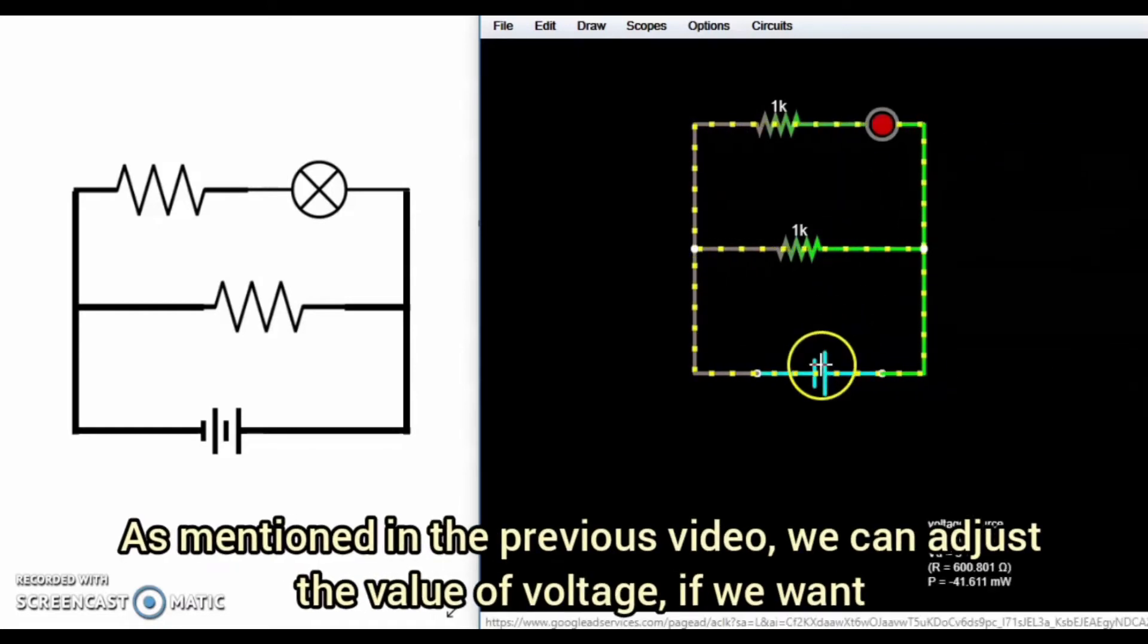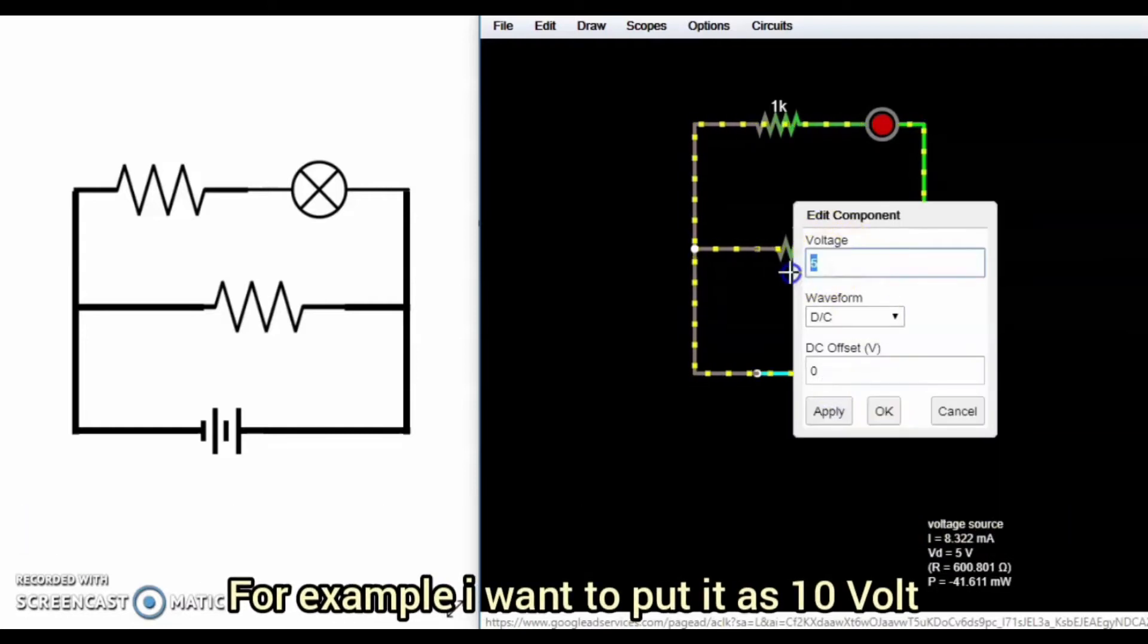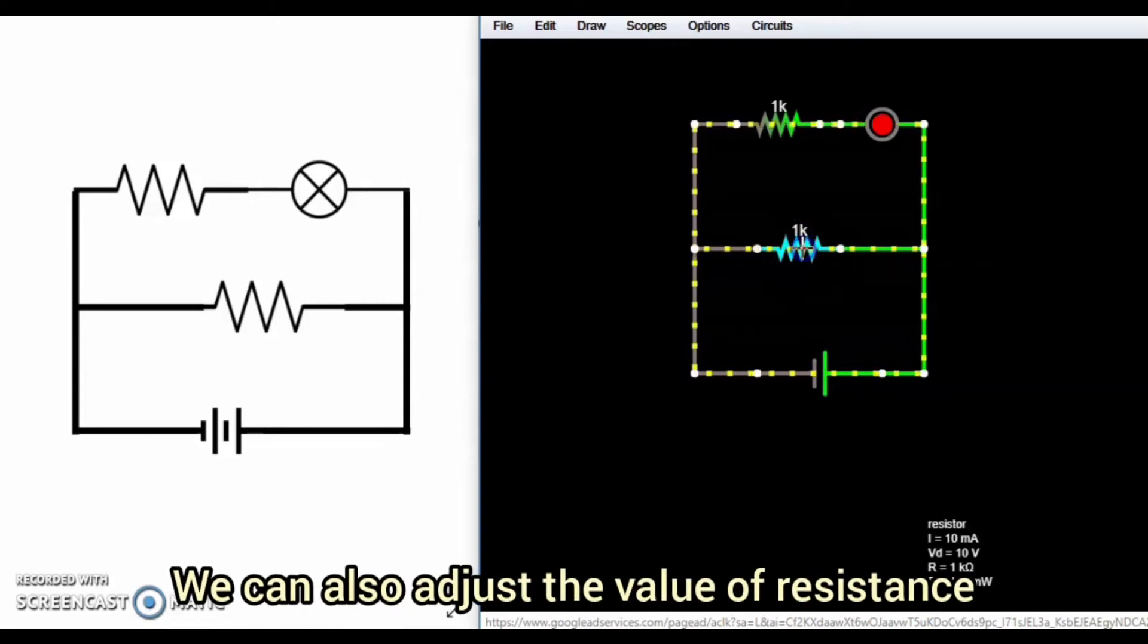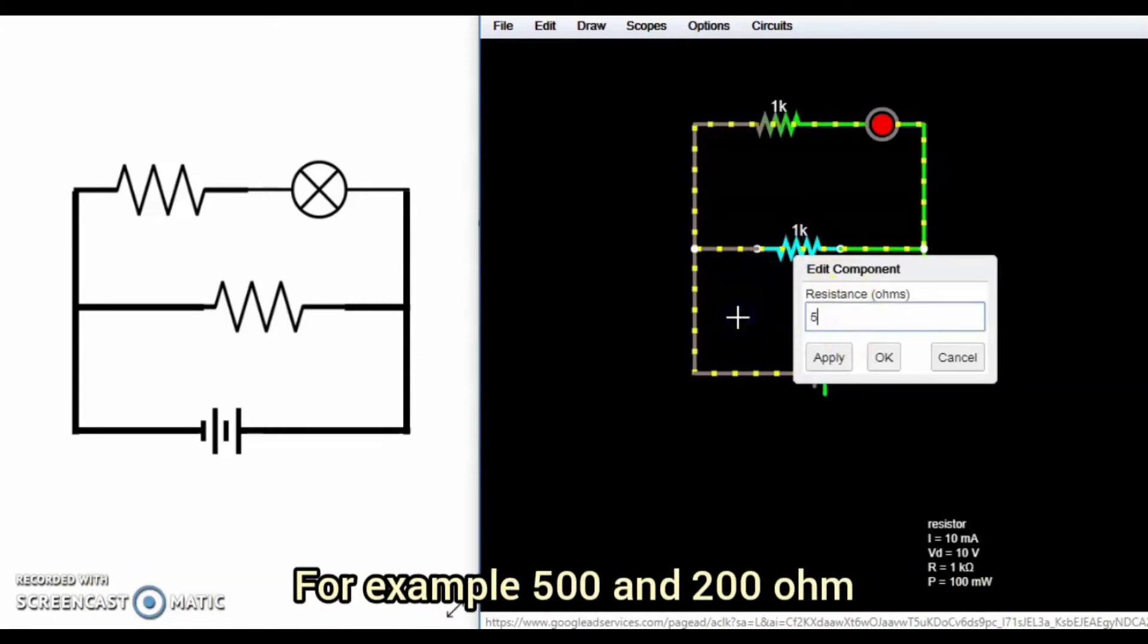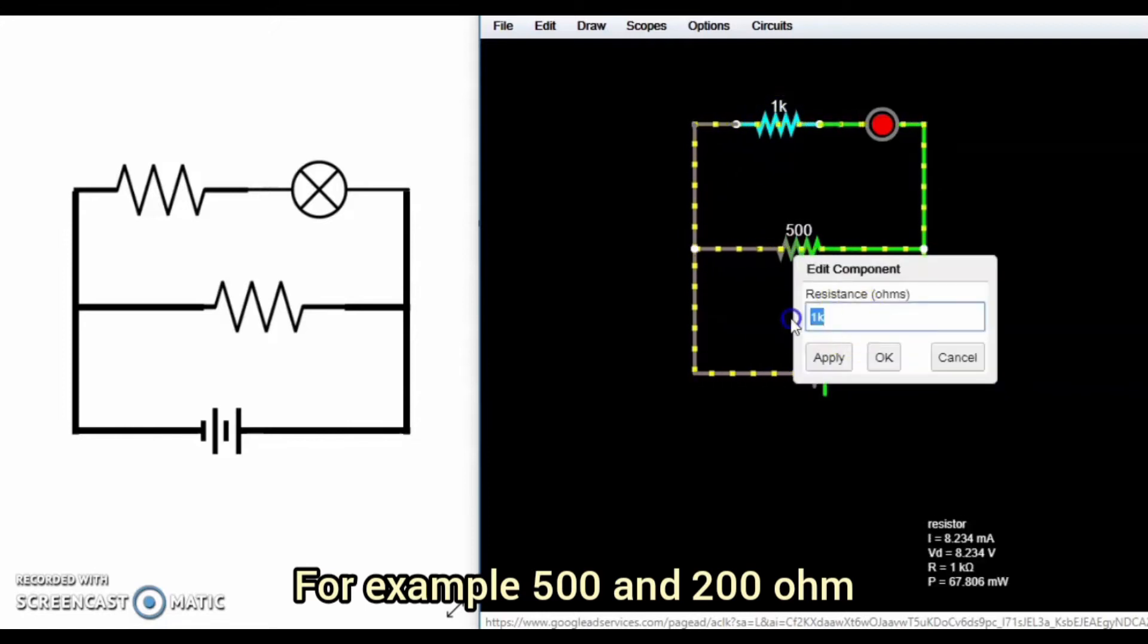As mentioned in the previous video, we can adjust the value of voltage if you want. For example, I want to put it as 10 volts. We can also adjust the value of resistance. For example, I want to add 200 ohms.